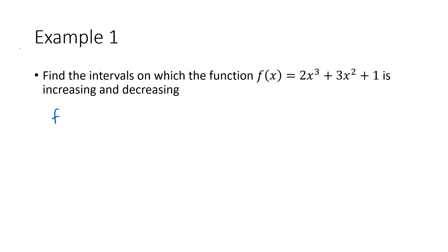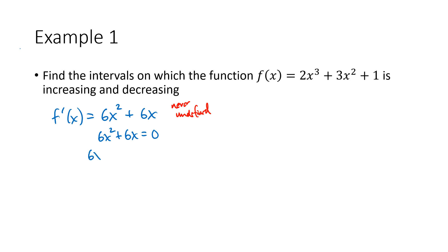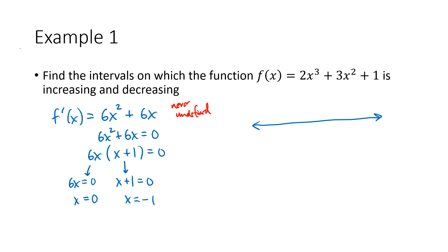So if I take the derivative of f(x) = 2x³ - 3x² + 1, the derivative of 2x cubed is 6x squared, the derivative of 3x squared is 6x, and the derivative of 1 is 0. This is a polynomial, so it's never undefined, so I won't have any of those kind of critical points. Setting it equal to 0: 6x squared plus 6x equals 0. I factor out 6x, leaving x plus 1, so either 6x equals 0 or x plus 1 equals 0, giving x equals 0 or x equals negative 1.